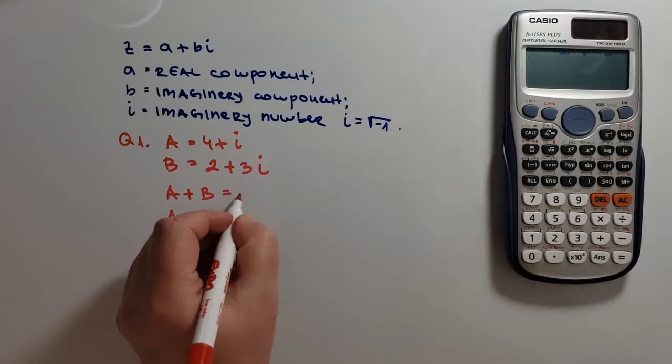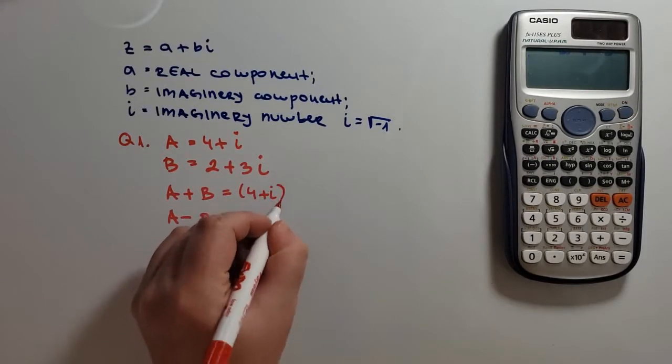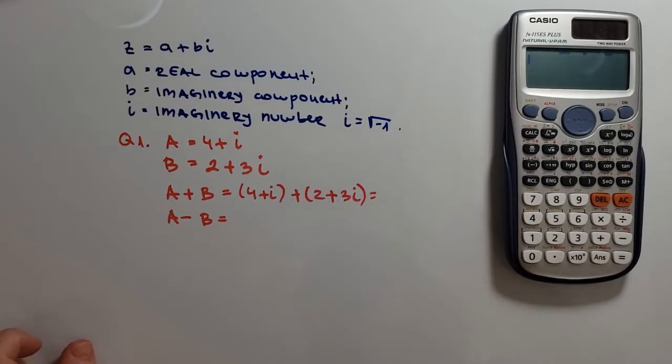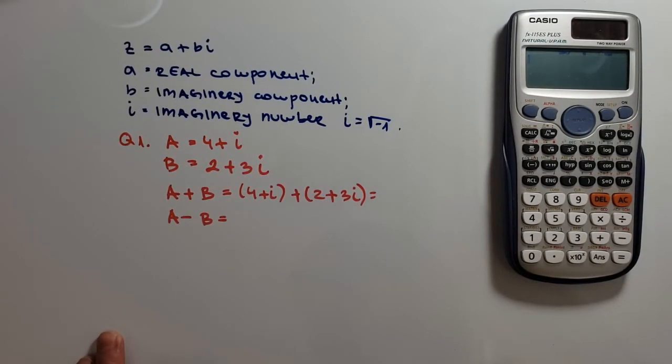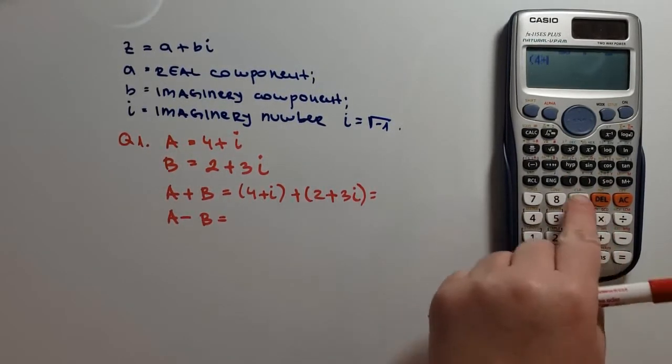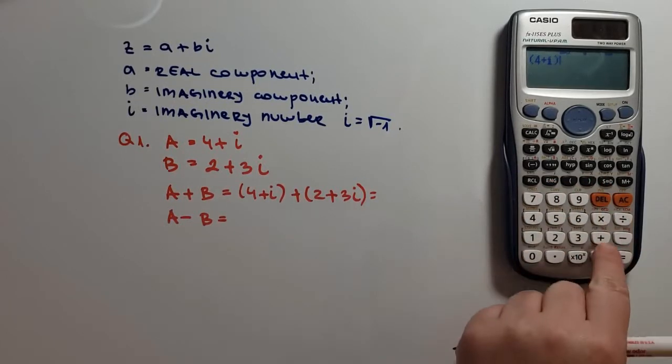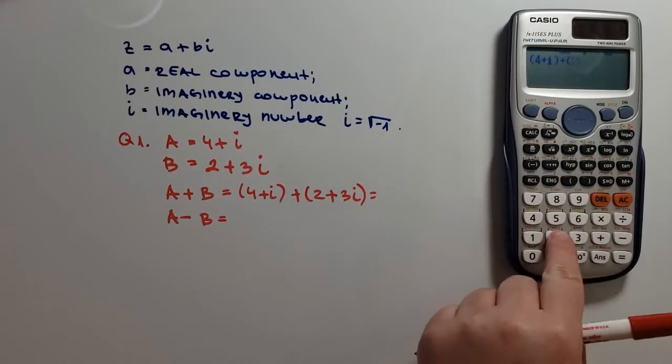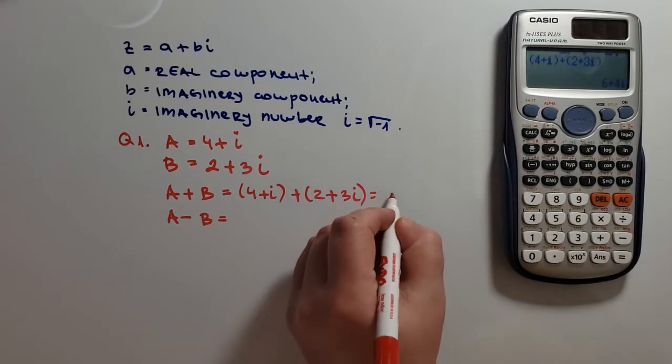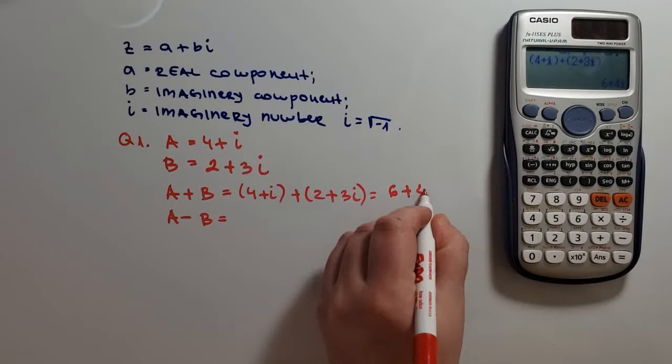So for the addition, we have 4 plus i plus 2 plus 3i. In the calculator, you can either use brackets or you don't have to, because the calculator obviously understands the difference between the real and the imaginary part. So we have 4 plus i plus 2 plus 3i, and this equals to 6 plus 4i.